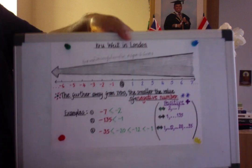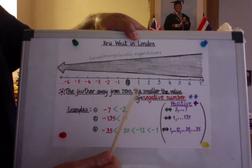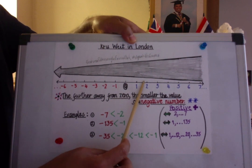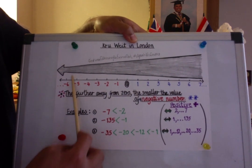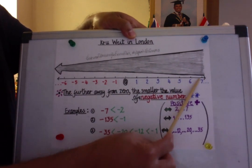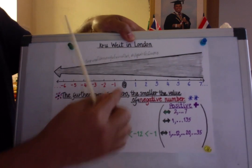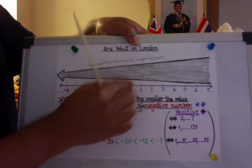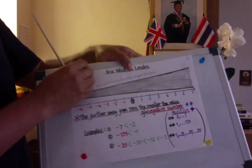Remember children, the number line is very important. Visualize yourself standing on the number line and running to the left — that means you are getting less and less. If you are standing at zero and run to the right-hand side, you are getting bigger and bigger. Play with it — imagine it: stand here, run to the left, run to the right. It's a fun way to learn math.